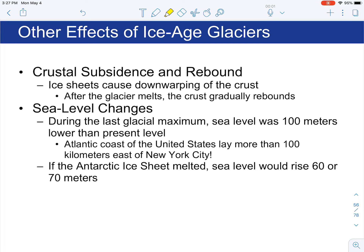During the last glacial maximum, which was approximately 20,000 years ago, sea level was 100 meters lower than it is right now. The Atlantic coast of the United States would have been about 100 kilometers — like 60 miles — east of New York City. If the Antarctic ice sheet were to melt entirely today, sea level would rise anywhere from 60 to 70 meters, which would have a huge effect on coastal areas in the United States and around the world.